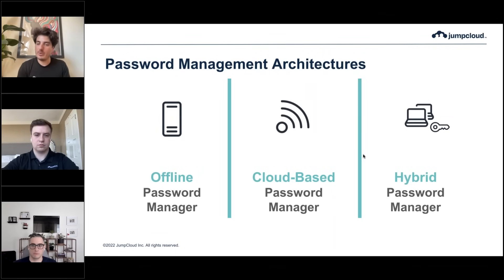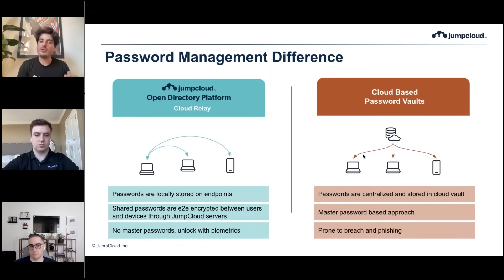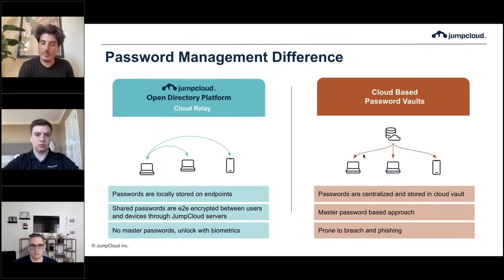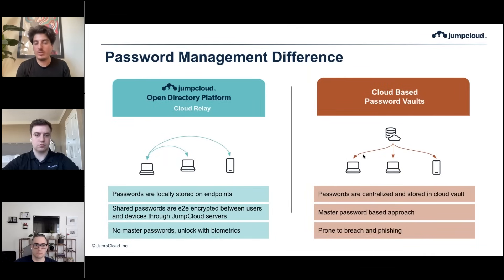The final approach, which is the one we created at JumpCloud, is the hybrid approach — the best of both worlds. Instead of storing passwords in the cloud and having users manage the keys, we store vaults locally on user endpoints, but those vaults sync in an end-to-end encrypted way across devices. You get the convenience of a cloud-based manager — accessible on any device, seamless syncing, sharing, centralized admin controls — plus security benefits of keeping data offline, and most importantly, no master password needed. Users authenticate using their biometrics or a local PIN.